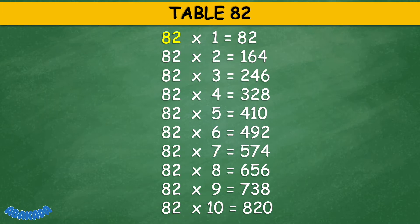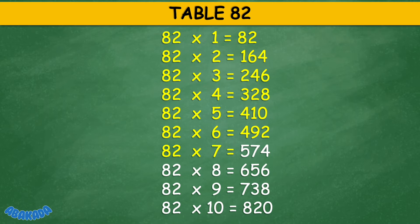Table 82: 82 times 1 equals 82, 82 times 2 equals 164, 82 times 3 equals 246, 82 times 4 equals 328, 82 times 5 equals 410, 82 times 6 equals 492, 82 times 7 equals 574, 82 times 8 equals 656, 82 times 9 equals 738, 82 times 10 equals 820.